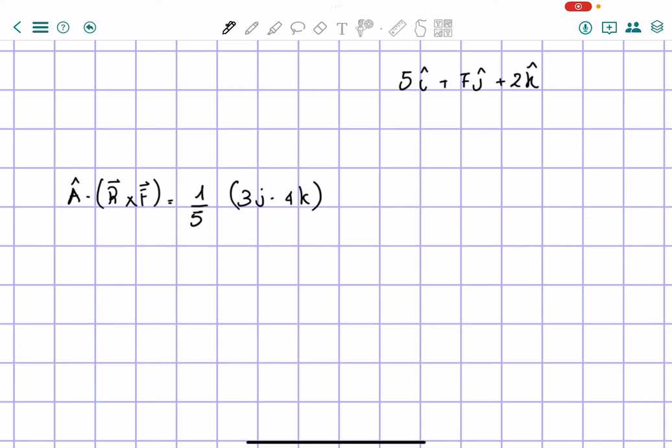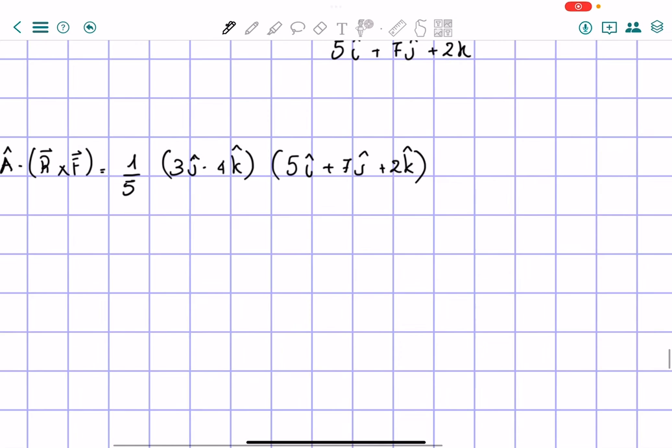times 5i hat, plus 7j hat, plus 2k. Now, whether you write the hat or not, it really doesn't matter. I prefer writing it, just because I understand that's the direction.